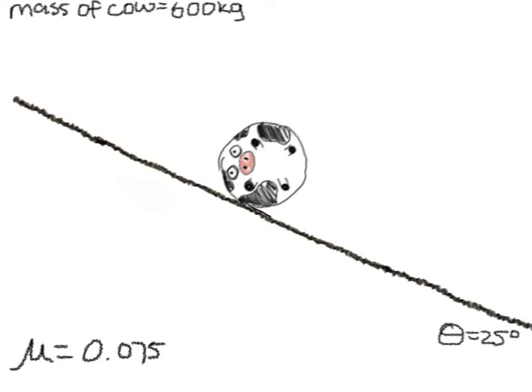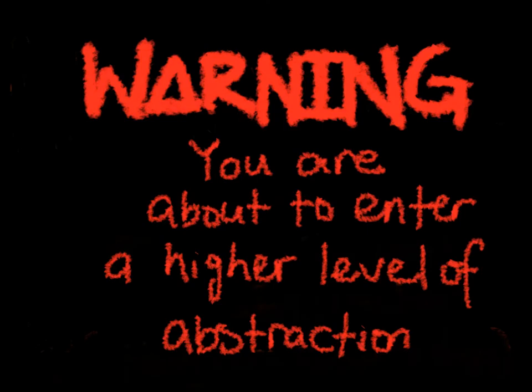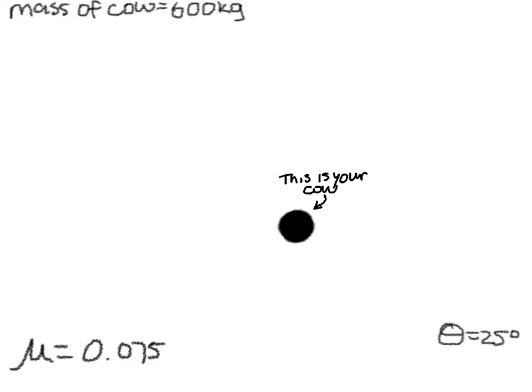I suggest we draw a free body diagram. For the sake of simplicity, we make the cow a point. This is important because we need to know what forces are acting on the cow. We draw each force as an arrow pointing away from the point.